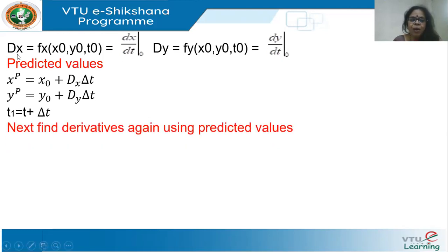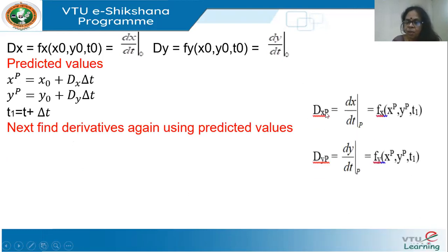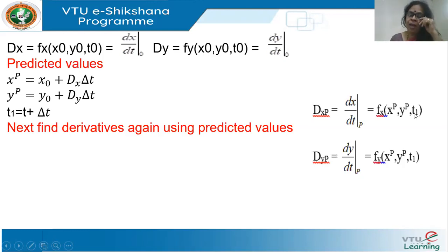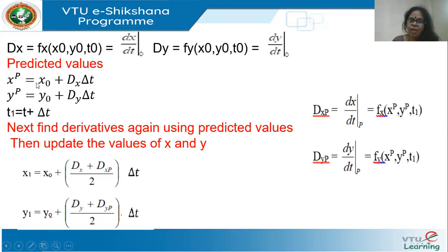Next, we calculate dx and dy again using these predicted values and the updated value of time. We find dx_p — using suffix p to denote predicted values — as (dx/dt)_p, evaluated using x_p, y_p, and t₁. If it's not a function of time, it depends only on x and y. Similarly, we find dy_p, the derivative dy/dt using the predicted values. Then we update the values: x₁ = x-naught plus the average of dx and dx_p times delta-t, and y₁ = y-naught plus (dy + dy_p)/2 times delta-t.